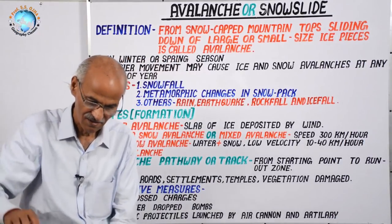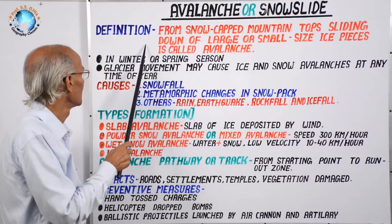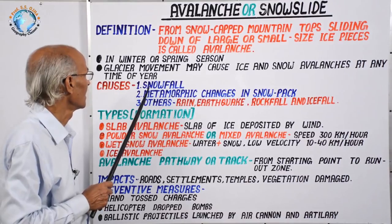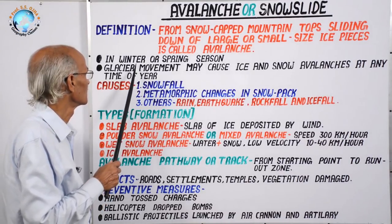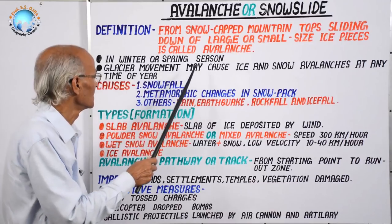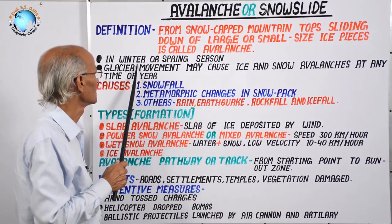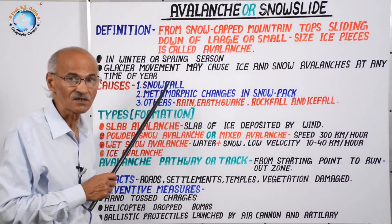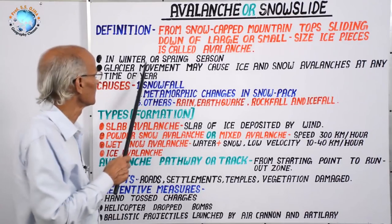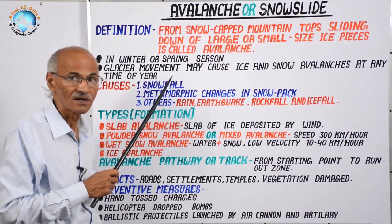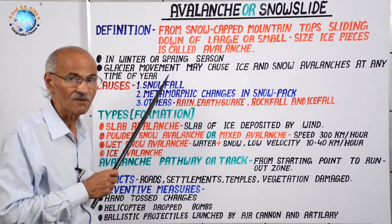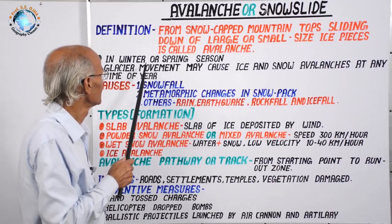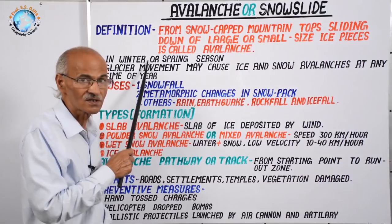After understanding the definition and area of avalanche, let us consider in which season avalanche generally occurs. There are two seasons: winter and spring. Avalanche generally occurs in winter because snowfall increases the thickness of snow, and that thick slab of ice slides down.